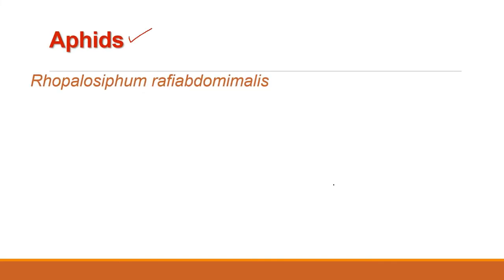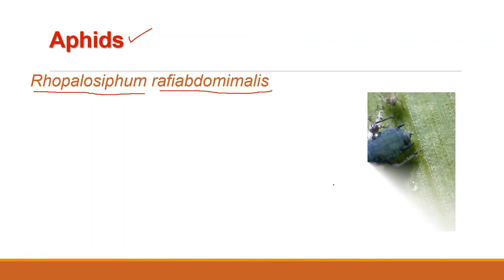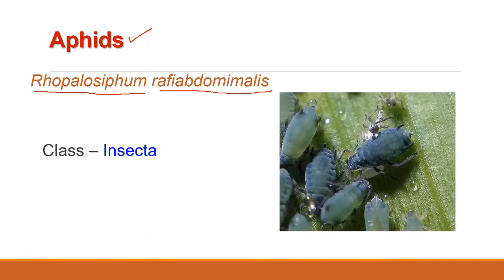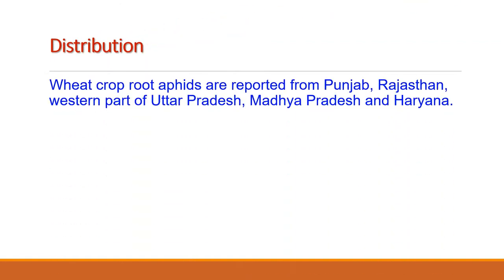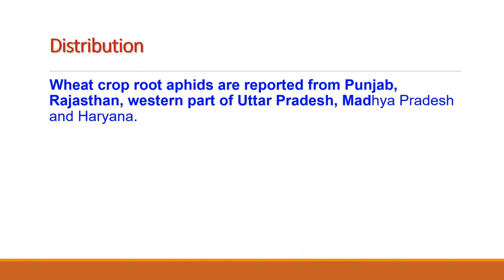The next pest is aphid. The zoological name is Rhopalosiphum rufiabdominalis. It belongs to phylum Arthropoda, class Insecta, order Homoptera and family Aphididae. Wheat crop root aphids have been reported from Punjab, Rajasthan, some parts of Western Uttar Pradesh, Madhya Pradesh and Haryana. This pest is more prevalent in the months of January and February, especially when the weather is cloudy.